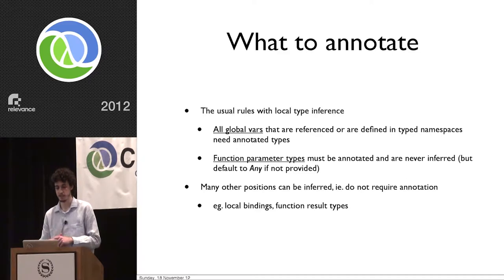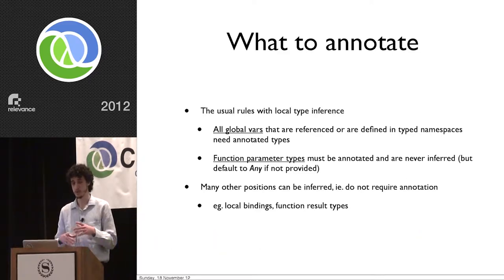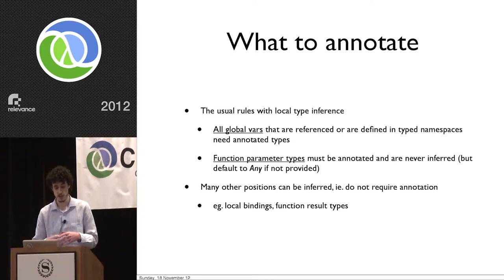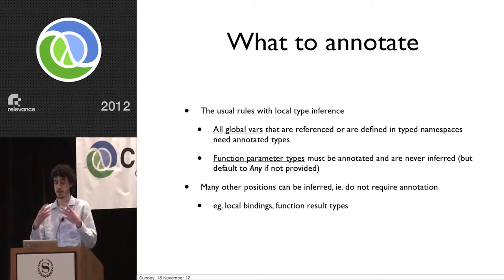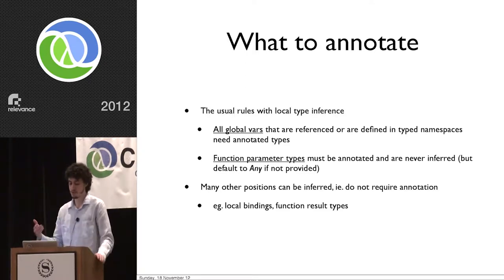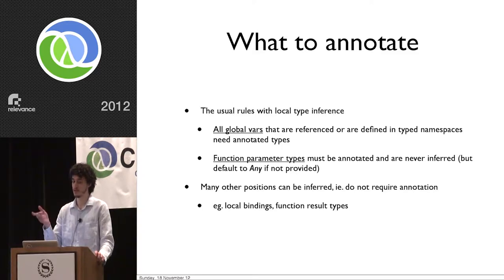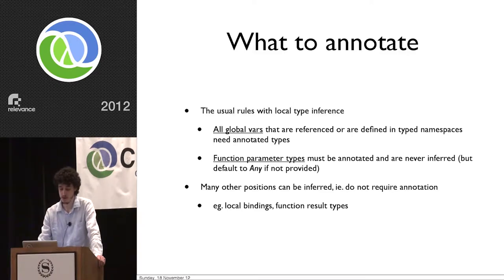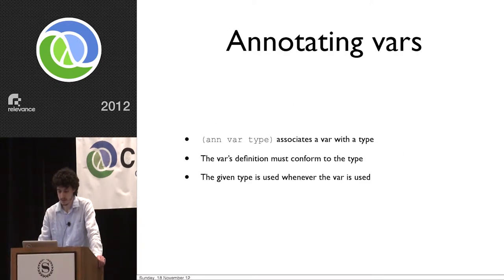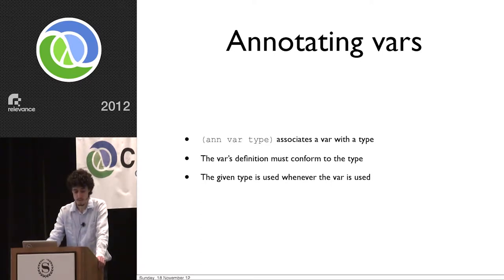What do we need to annotate to get Type Closure to work? There are two usual rules with local type inference. First, we need to annotate all global vars referenced or defined in a typed namespace — when we come across a def, we need to already know an expected type. Also, function parameter types must be annotated and are never inferred; if you don't annotate them, they default to Any, which is the top type, similar to Object in Java. Many other positions can be inferred, notably local bindings. To annotate a var, you use the ann function. Let me show you what happens if you try to check a definition without an expected type — you get an 'untyped var reference' error.